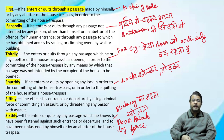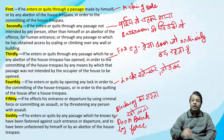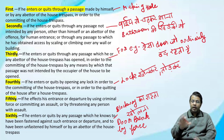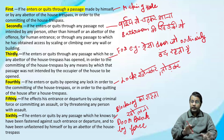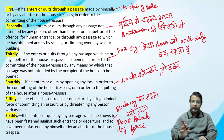Section 445 में — First: if he enters or quits through a passage made by himself — मतलब कि कोई एक hole बना दिया, for example एक घर है, वहाँ पर एक secret जगह बना दी, वहाँ से घुसता है — यह हो गया house breaking का पहला तरीका।